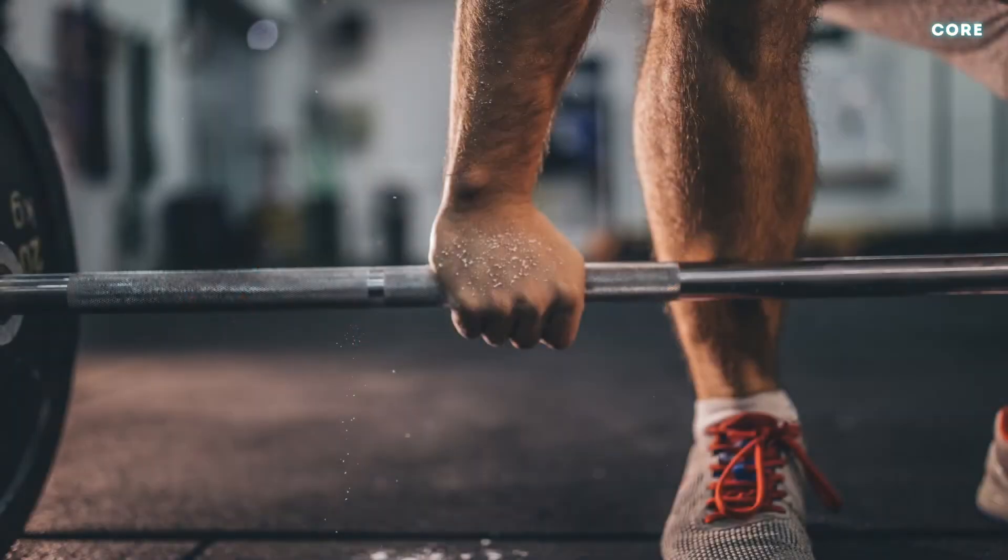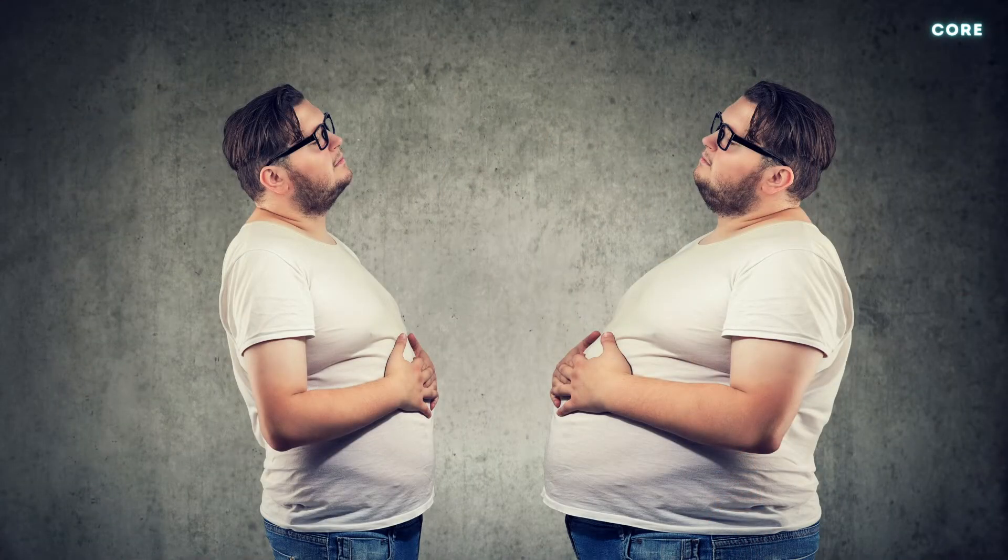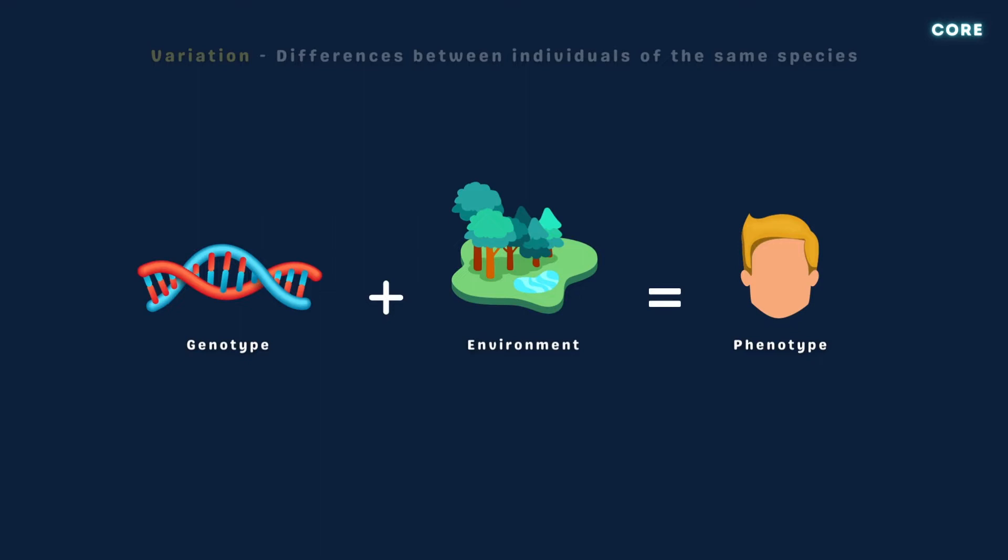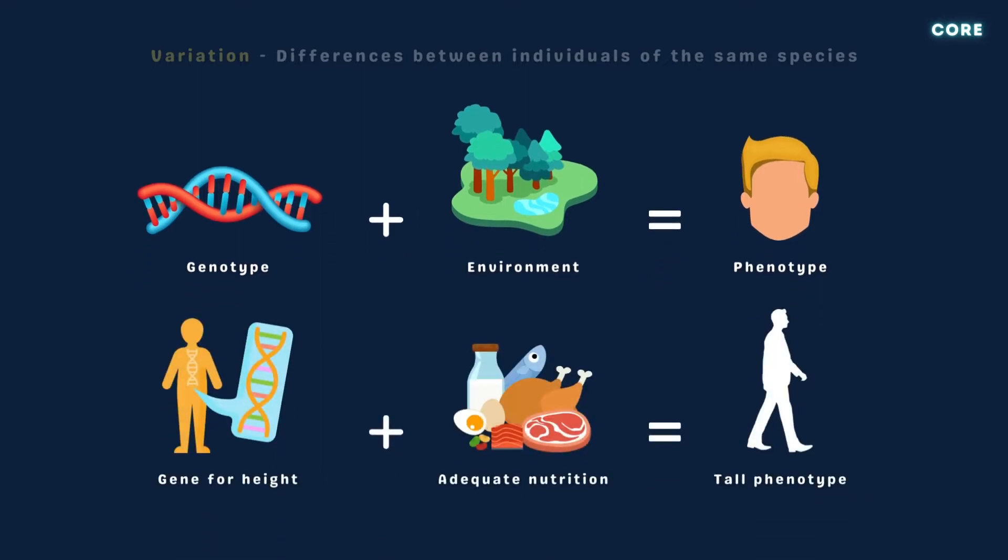For example, by lifting weights you can become more muscular, and by eating more you're likely to accumulate fat. Some variations are caused by a combination of genes and the environment. For example, an individual who inherits the predisposition to be tall will only grow up to be so if they have access to the right nutrition during childhood.